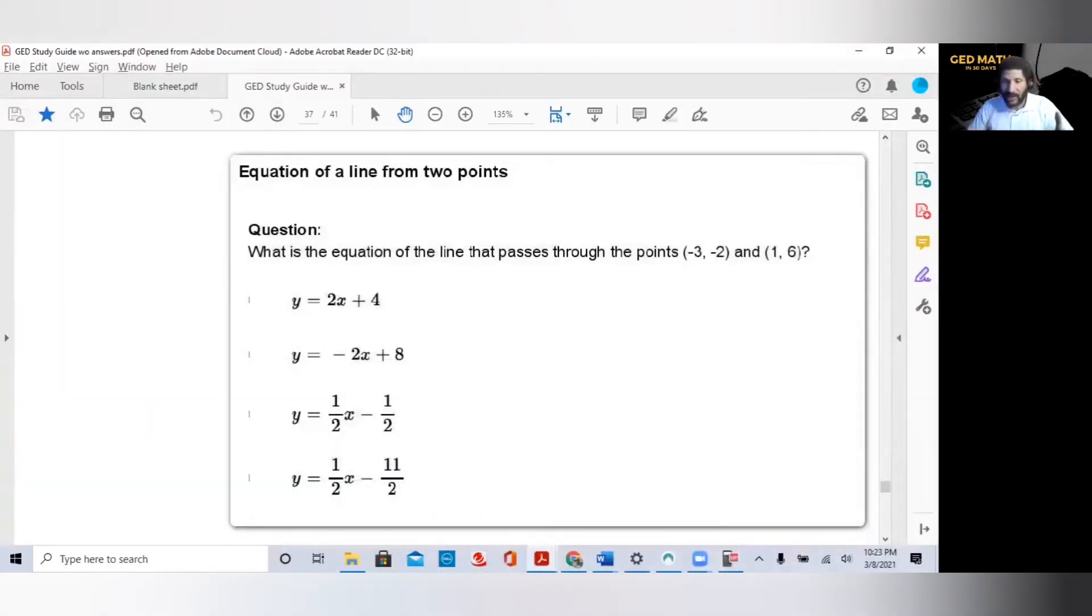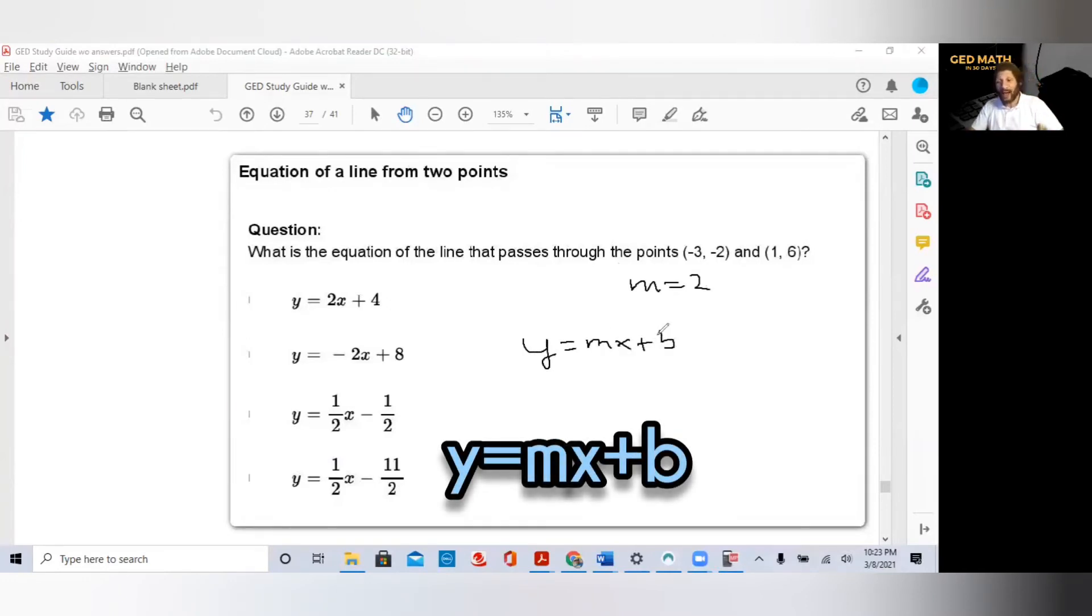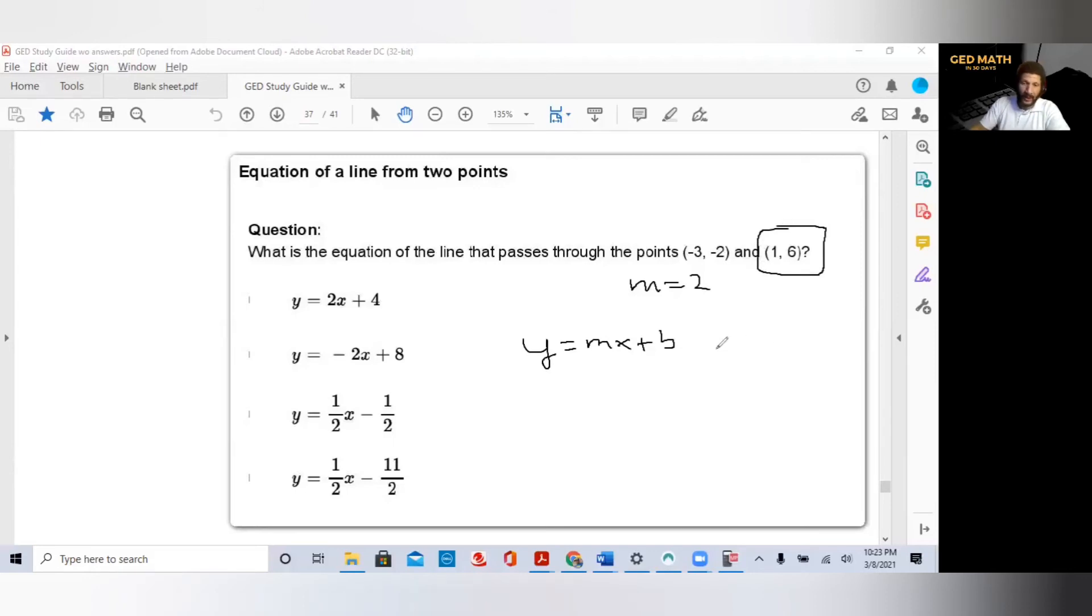Now, they don't want just the slope. In this question, they're asking for the equation. So what do we know? We have two points and now we know our slope is 2. So we're going to plug it into our slope intercept form, Y equals MX plus B. I like to use positive numbers, so I'm going to use this point here. So my Y is 6. My slope is 2. My X is 1 from my point plus B. 6 equals 2 plus B. In order to get B by itself, I'm going to subtract 2 from both sides. 6 minus 2 is 4. My twos cancel, and B is equal to 4.